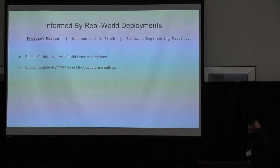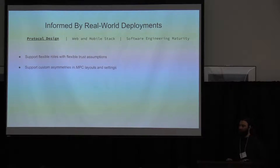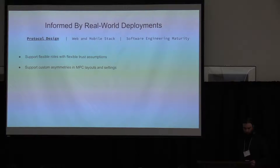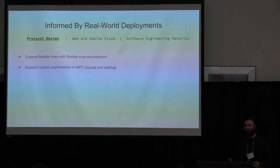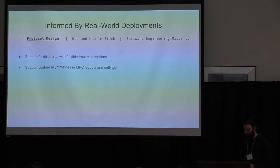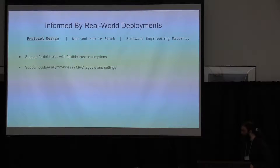We really have three axes through which we wanted to design JIFF: protocol design, the web and mobile stack, and software engineering maturity. On protocol design, you want to support a flexible landscape. Different parties have totally different capabilities in terms of computation, availability, network bandwidth, and resources. They also have inherently different trust assumptions. Every party will care about protecting different aspects of the data, and we want to utilize those asymmetries to get better efficiency.